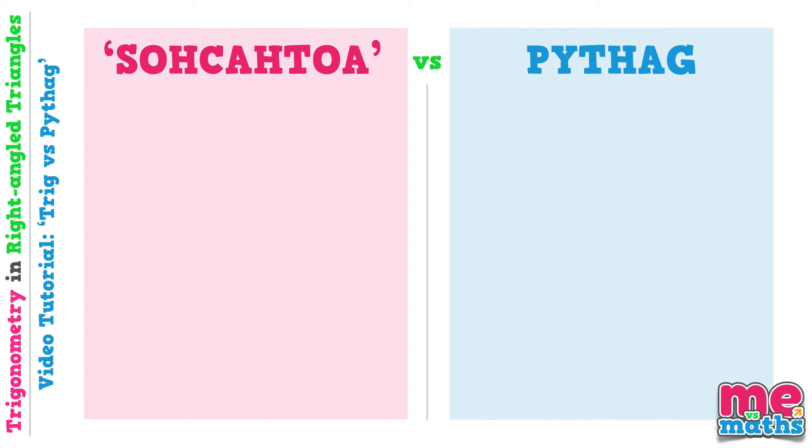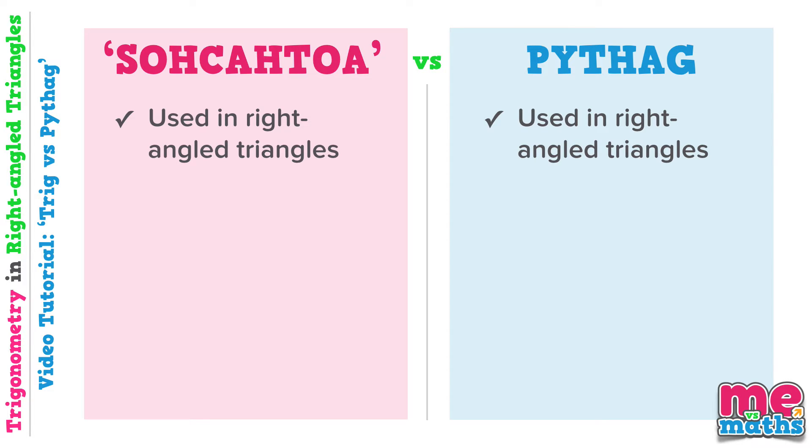So let's start with a quick comparison between right angle trig or SOHCAHTOA and Pythagoras. Firstly, they're both only used in right angle triangles. They can both be used to find a missing side, but with trig to find a side we need another side and an angle.